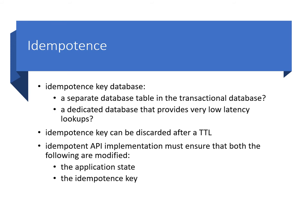An idempotent API implementation must ensure that both the application state is modified and the idempotence key is stored — both must occur for success. If the application state is modified but due to some failure the idempotence key is not stored, a retry will cause the operation to be applied twice because the server won't find the key when it looks it up. Conversely, if the idempotence key is stored but the application state is not modified, the operation has not been applied. When a retry occurs, it will be filtered out as a duplicate and the update will be lost.